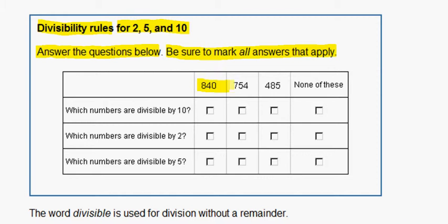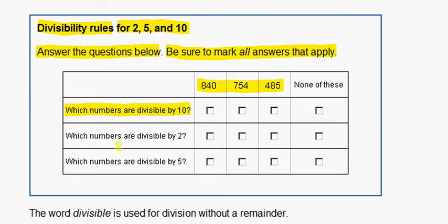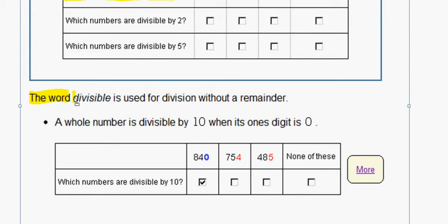So, here are our numbers, and it is asking us which numbers are divisible by 10. Remember, the word divisible is used for division without a remainder. A whole number is divisible by 10 when its ones digit has a 0.